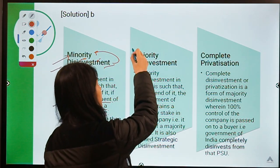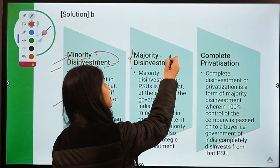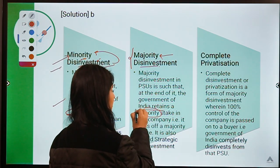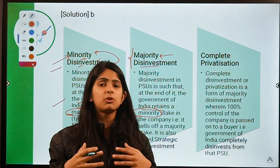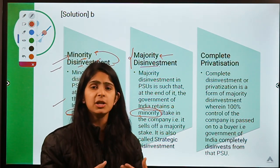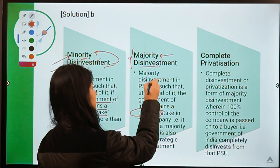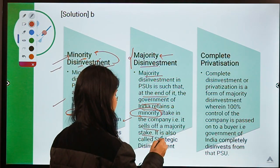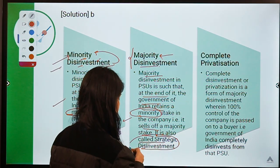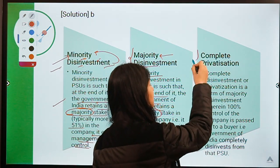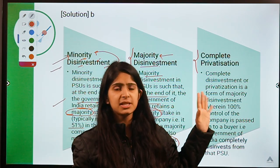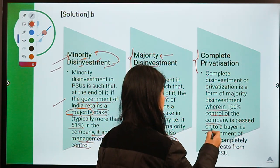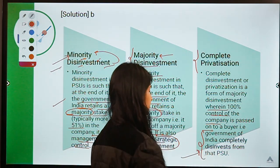The opposite happens in majority disinvestment: a major share of a PSU is disinvested and the Government of India retains only a minority stake. Most of the voting power is transferred to the private sector. Majority disinvestment is also called strategic disinvestment. In complete privatization, 100 percent of shares of a PSU are transferred to the private sector and government completely divests from that PSU.